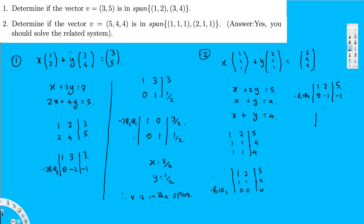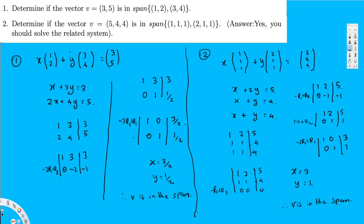I multiply row 2 by negative 1 to make it positive, giving [0, 1 | 1]. Then to eliminate the 2 above the pivot in row 1, I do -2R2 + R1, which gives [1, 0 | 3]. So the reduced form is [1, 0 | 3] and [0, 1 | 1]. We have a solution: x = 3 and y = 1. Since there is a solution, the vector v is in the span. That's how we do this kind of question.